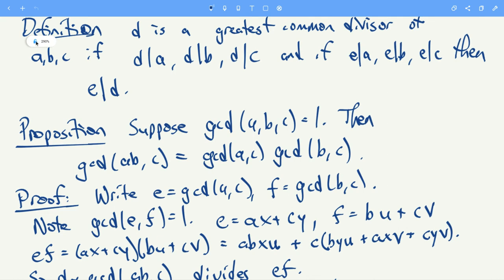We can also define the greatest common divisor of three integers, or even more. We do it the same way: d is the greatest common divisor of a, b, and c if d divides all three, and any other divisor of all three numbers also divides d.